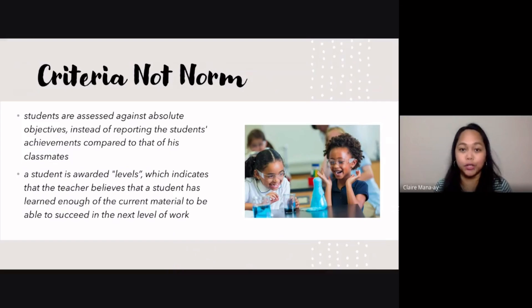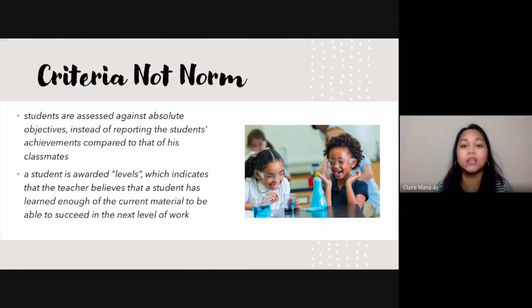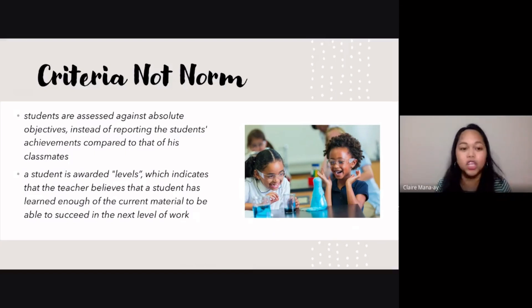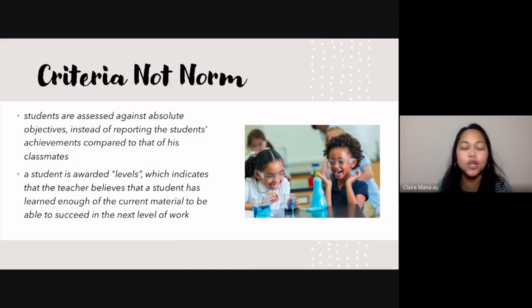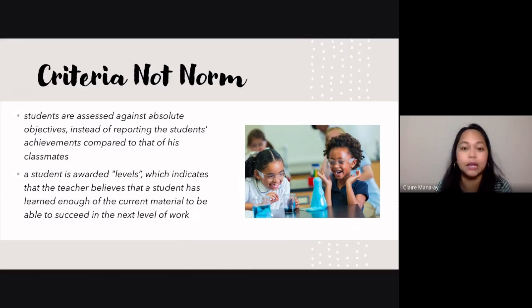Another important thing to understand about OBE is that it is focused on criteria and not on the norm. Students are assessed against absolute objectives instead of reporting their achievements compared to classmates. That means norm-referenced testing or grading on the curve is not done in OBE. Instead, students are awarded levels indicating that the teacher believes they have learned enough of the current material to succeed in the next level. In OBE, there are actually no failing students — if a student does not reach the outcomes set for a particular level, the student simply reviews that level together with peers.